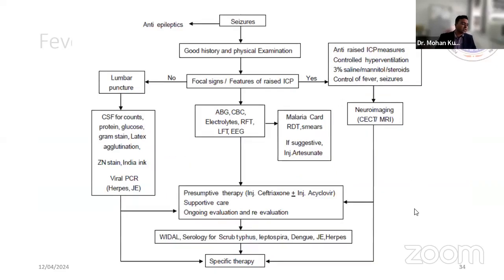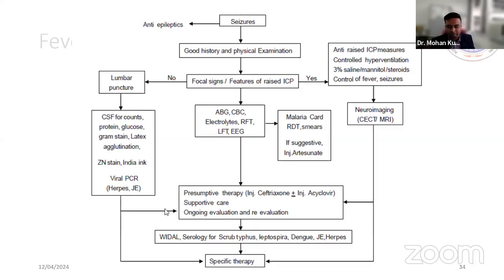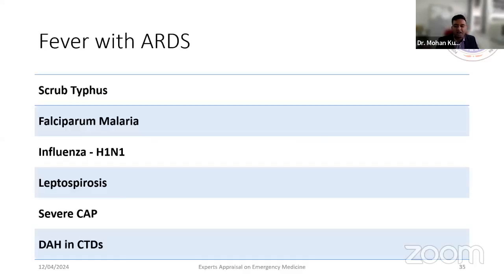The tropical fever management guidelines flowchart for fever with encephalopathy: if the patient presents with seizures and has localizing signs or raised ICP, take measures to decrease ICP, control fever, and proceed with imaging. If there are no localizing signs, do CSF analysis. If CSF is suggestive, treat specifically. If not, start empirical therapy with ceftriaxone and acyclovir, which covers the majority of tropical infections. Also test for dengue, malaria, and scrub typhus with RDTs in the emergency department.